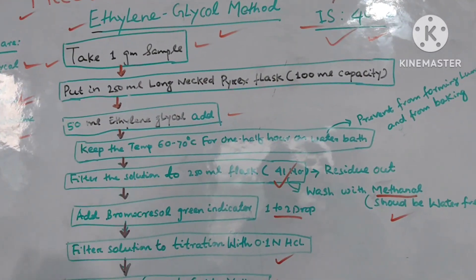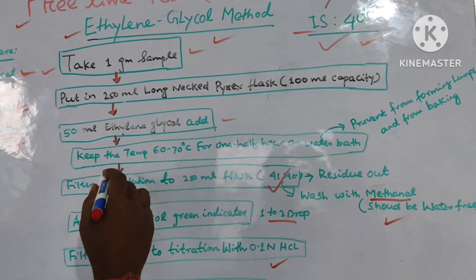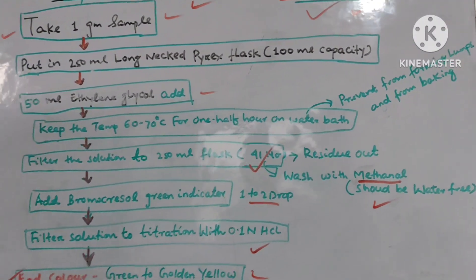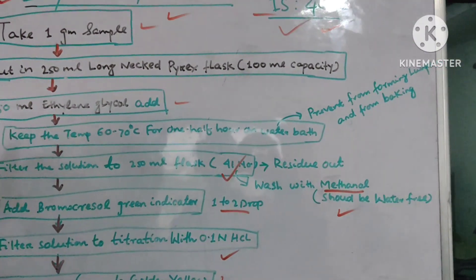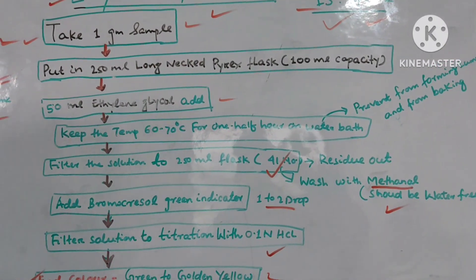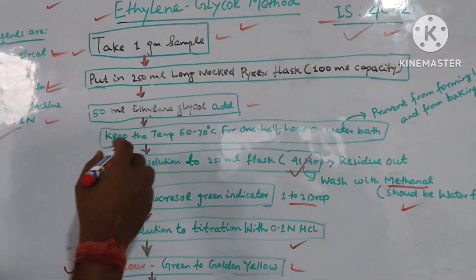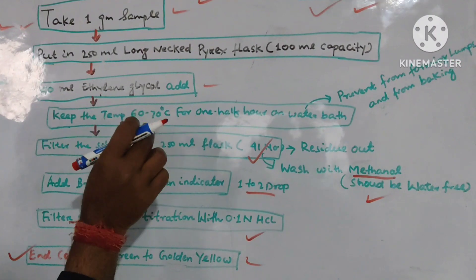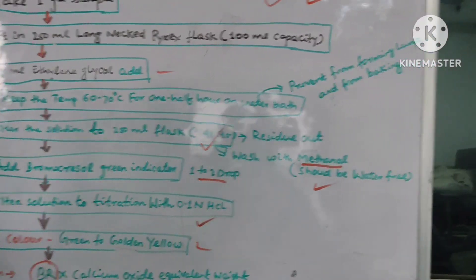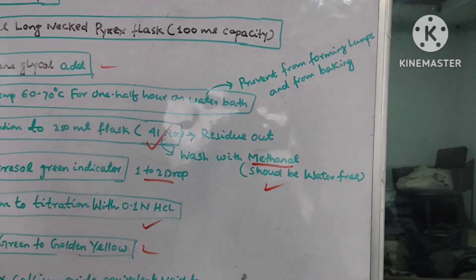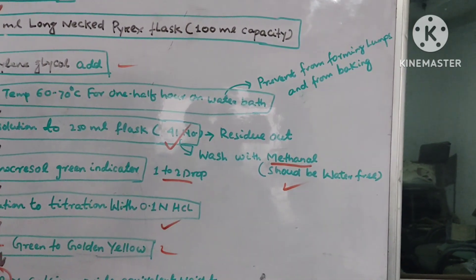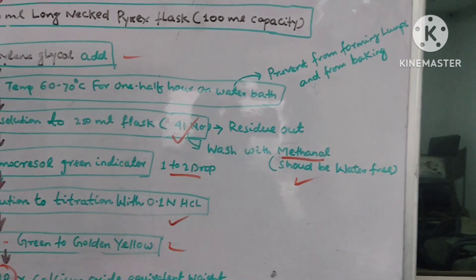Keep the temperature at 60 to 70 degrees for one and a half hours on a water bath. It should be noted every five minutes — it should not form lumps or cause baking. We can say: prevent the forming of lumps and the forming of baking.